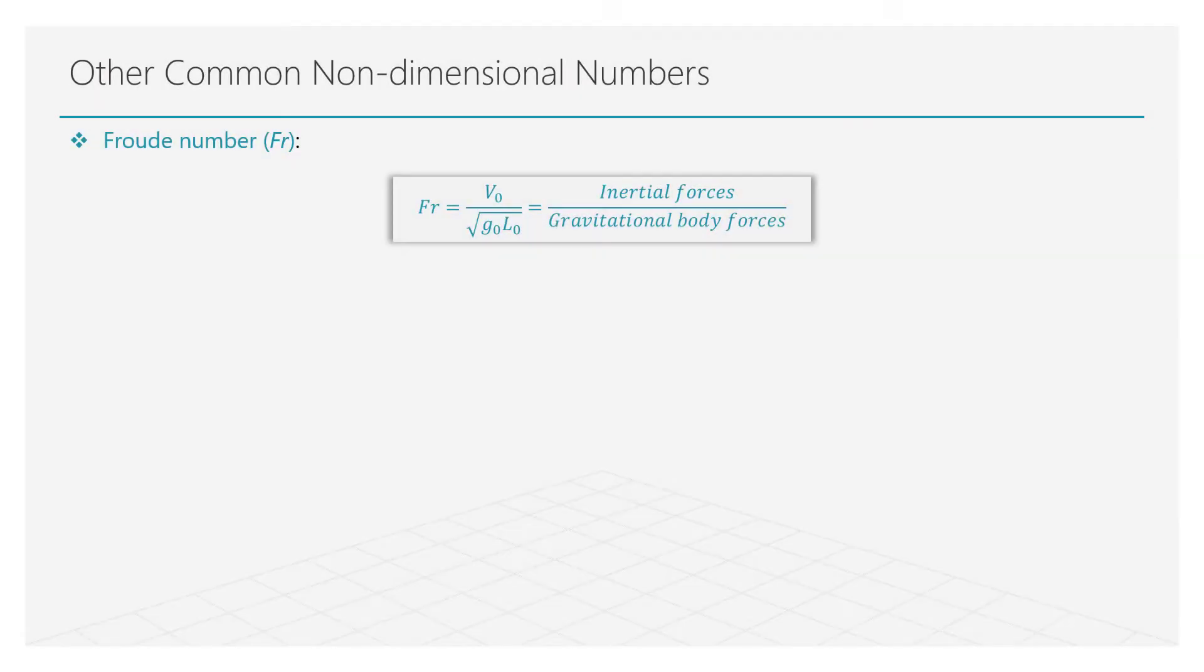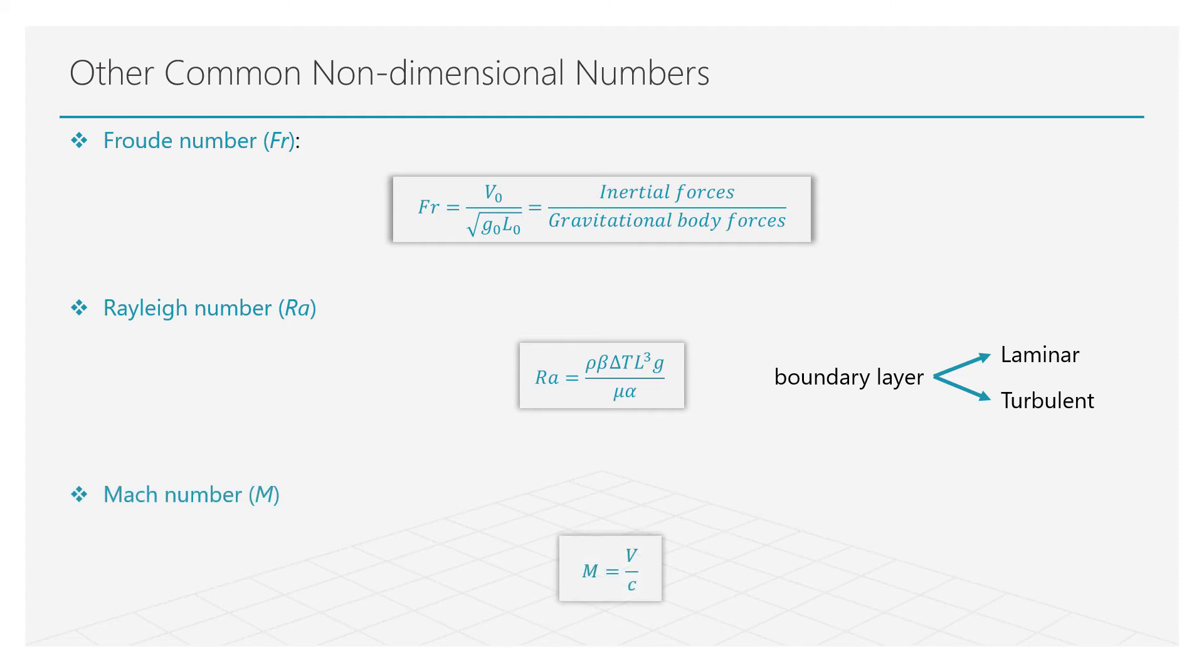Other examples of non-dimensional numbers are the Rayleigh number, that indicates if the boundary layer will be laminar or turbulent in natural convection, and the Mach number, that is really important to characterize compressible flows. The Mach number is the ratio of the flow speed to the speed of sound.